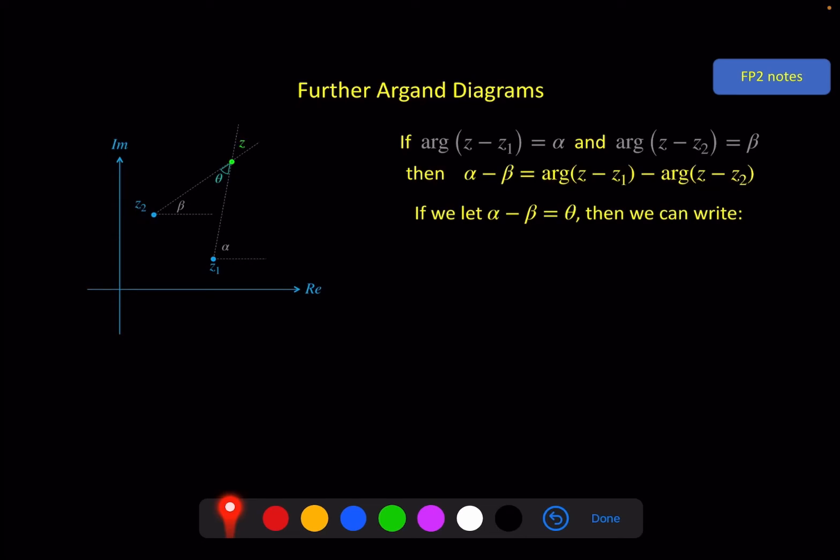We also need to remember that the argument of a complex number minus the argument of another complex number can be written as the argument of the first one divided by the second one. Putting that with this allows us to write this statement here, and this is the locus format you need to be familiar with. The argument of (z minus z1) divided by (z minus z2), where z1 and z2 are both fixed points, is equal to theta, where theta is going to be a fixed constant like alpha in the previous one.